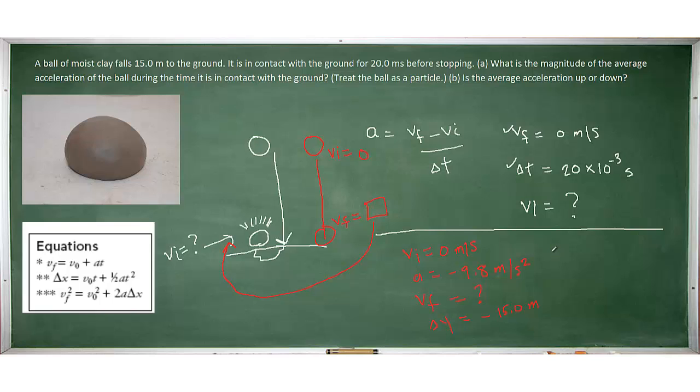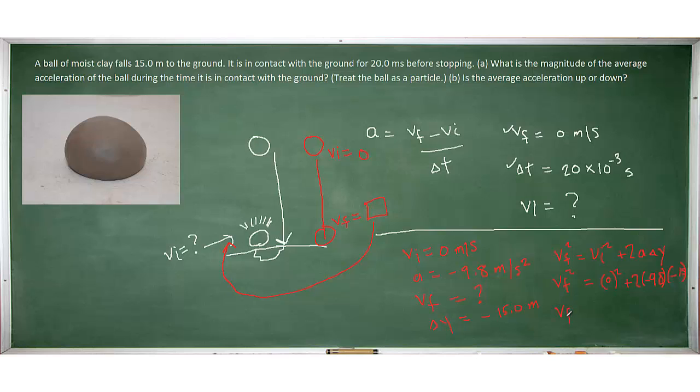So we need one of our kinematics equations to calculate this final velocity. And we'll go ahead and we'll plug in what we know. The ball was dropped as we said, so that's actually 0. Acceleration is negative 9.8. And the y displacement was negative 15. Squeeze that in there. So we'll go ahead and calculate that.